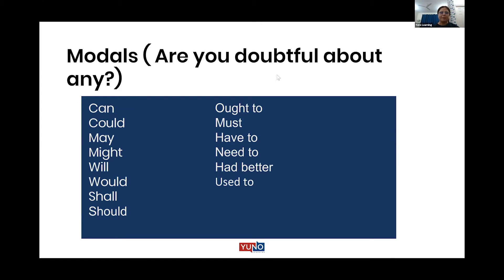These are the words: can, could, may, might, will, would, shall, should, ought to, must, have to, need to, had better, used to. Let's look at all these. Can and could — when do we use them? When you have to talk about the technical possibility of something. Technically something is possible, then you use can or could.